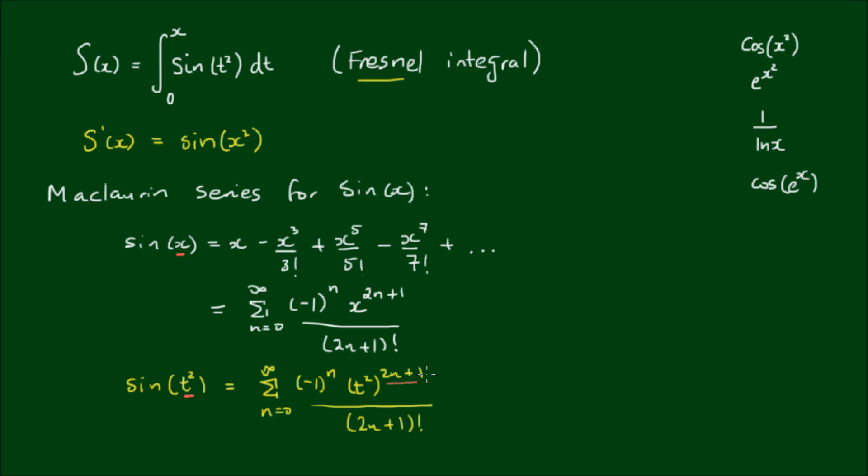And now if I apply my index laws, and take this 2n+1 into the parentheses, I'll get the sum from n equals 0 to infinity, of (-1)^n, by t^(4n+2), all over (2n+1) factorial.